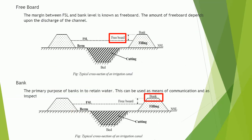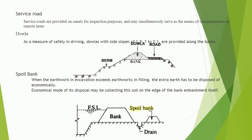Freeboard — the margin between full supply level and bank level is known as freeboard. The amount of freeboard depends upon the discharge of the channel. Bank — the primary purpose of banks is to retain water; they can also be used as means of communication and inspection paths. Service road — service roads are provided on canals for inspection purposes and may serve as means of communication in remote areas. Dowla — as a measure of safety, dowlas with side slopes of 1.5:1 to 2:1 are provided along the banks.